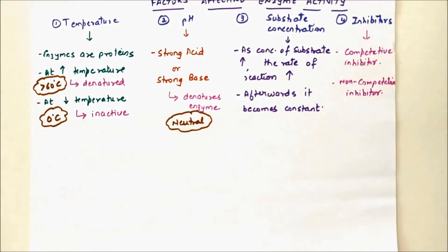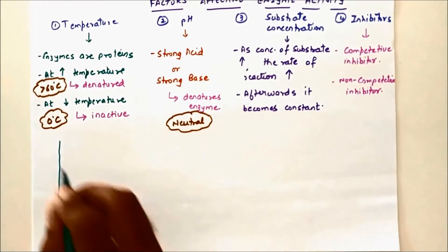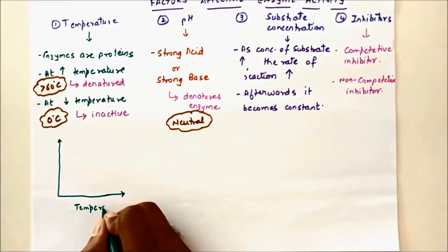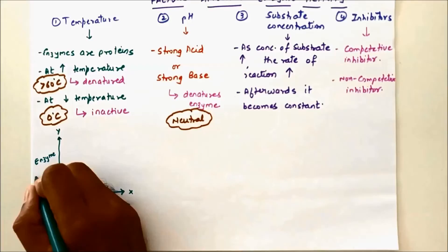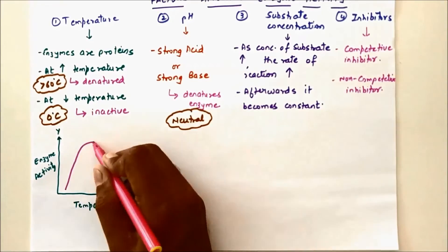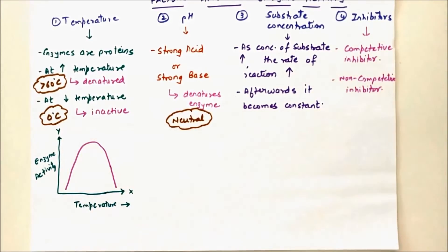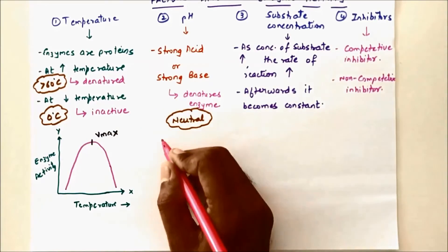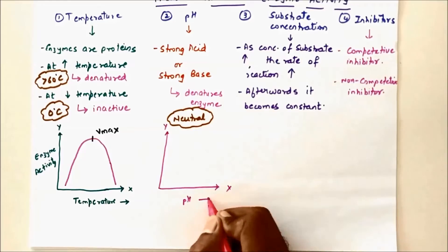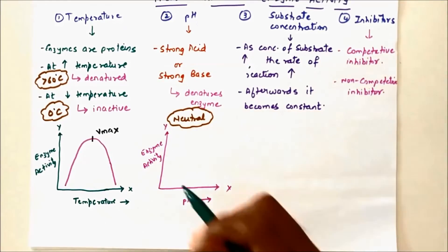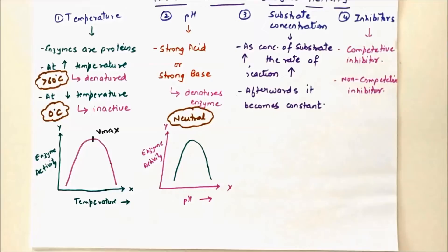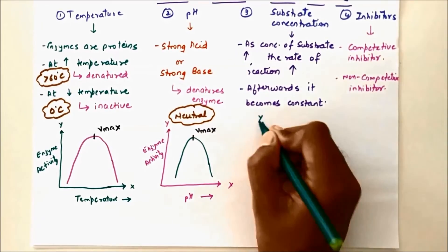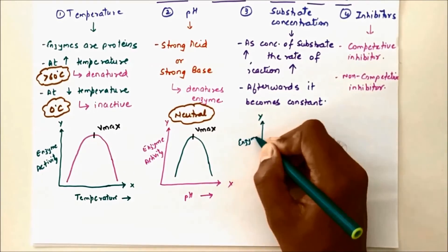Competitive inhibitors and non-competitive inhibitors are two types of inhibitors that affect enzyme activity. In the NEET exam graph, temperature is on the X-axis and enzyme activity on the Y-axis — a bell-shaped curve peaks at Vmax. Similarly for pH: as it increases the activity rises to Vmax, then decreases. The graphs for temperature and pH are almost the same shape.